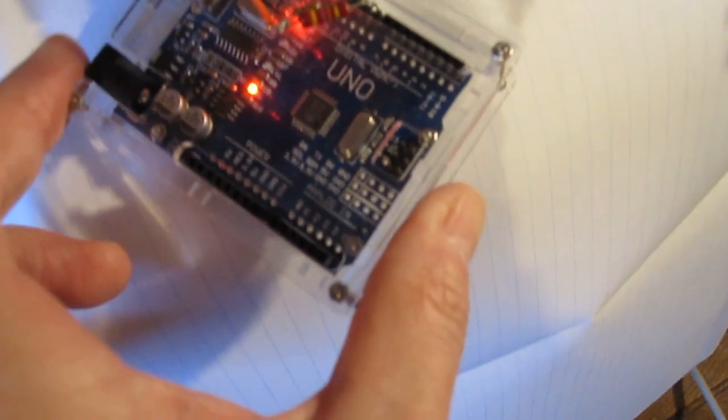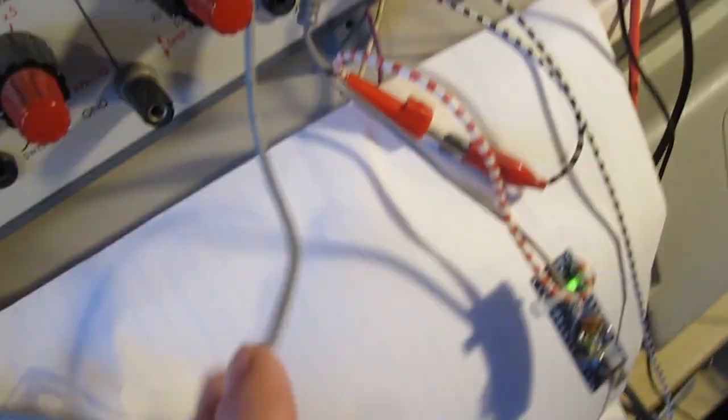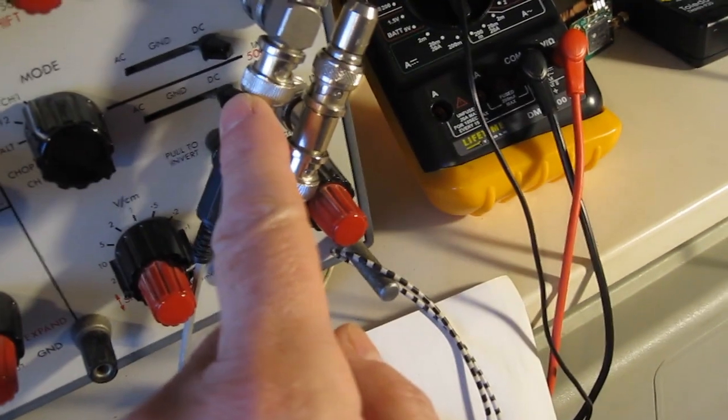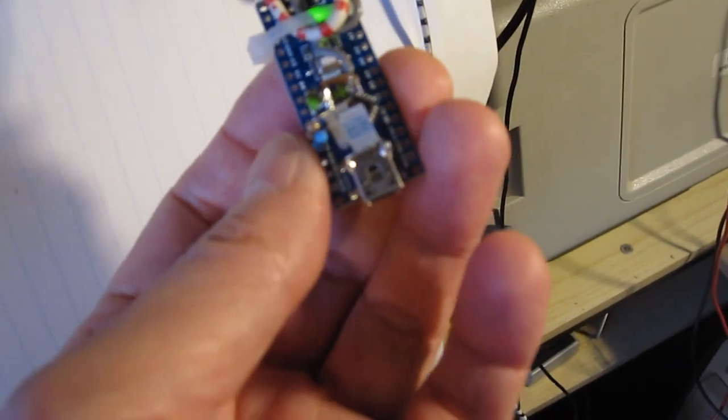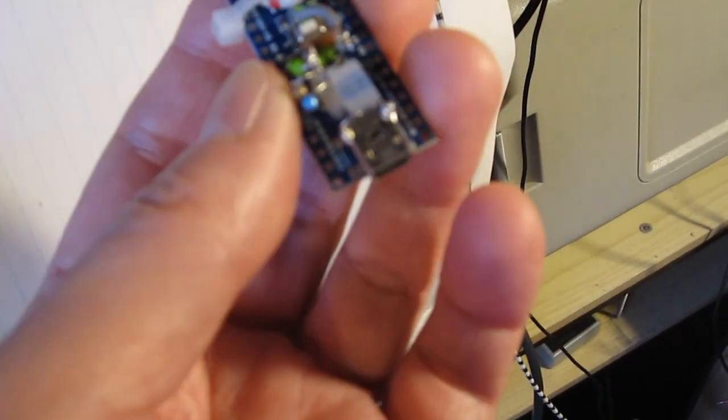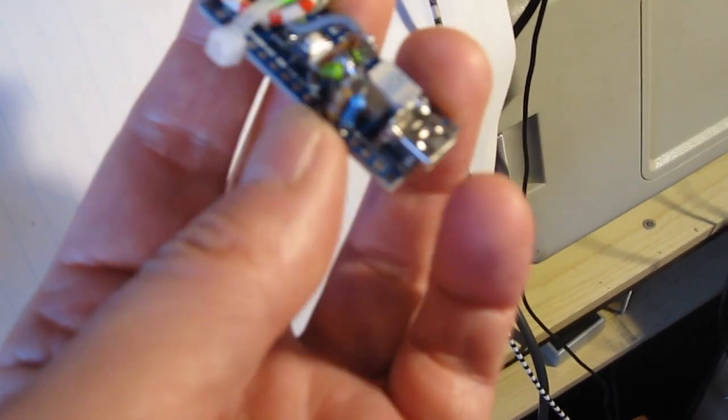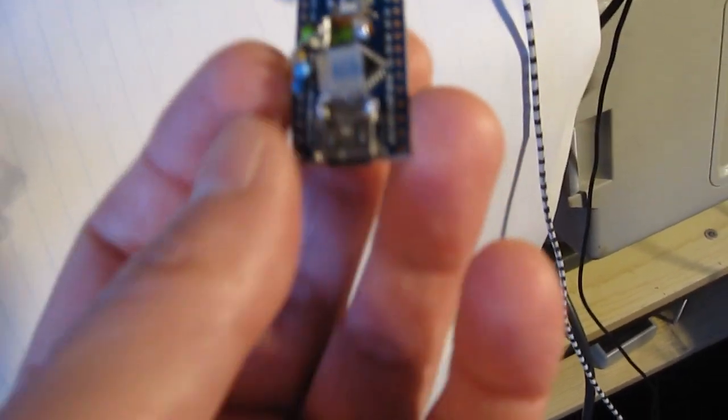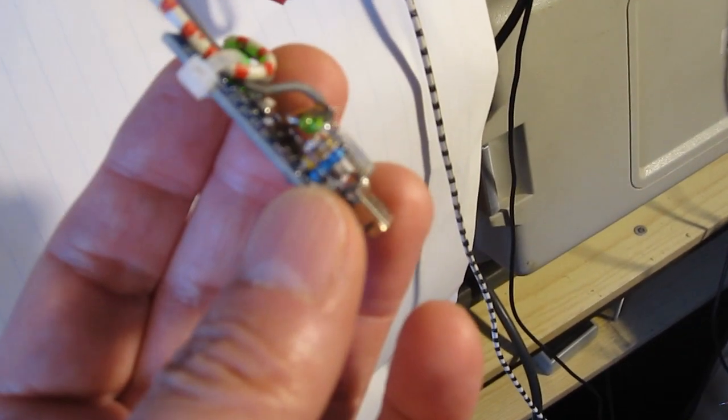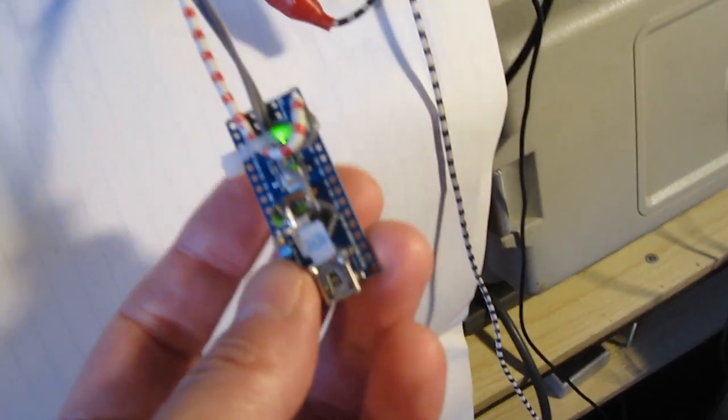So here I have the Arduino Uno with the two resistors going to the oscilloscope. And to compare, I have here the same Arduino but in this case it is a Nano. And I have here the low pass filter added. And I will demonstrate what the effect will be.